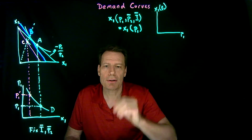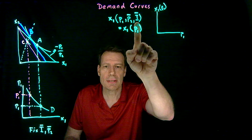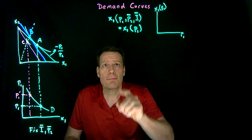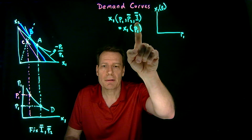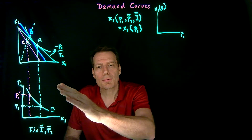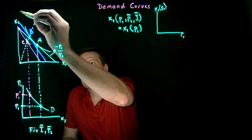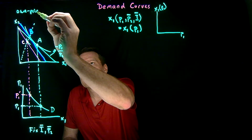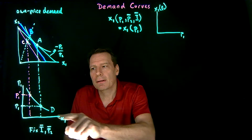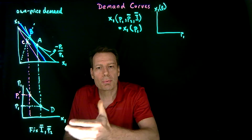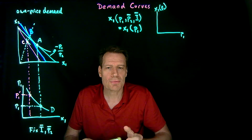That's how demand curves and demand functions are related to one another. If we change the price of good 2 or change income, that's going to shift the demand curve. If only the price of good 1 changes, we just move along the demand curve. But if either the price of good 2 or the income level changes, the demand curve will typically shift. This kind of demand curve we sometimes call an own price demand curve, and usually when we say 'demand curve' we mean an own price demand curve — we just drop the 'own price.'